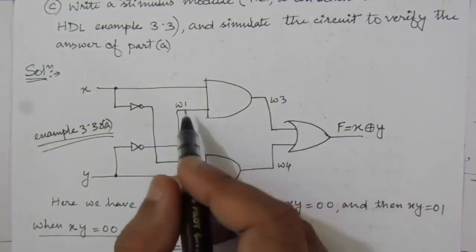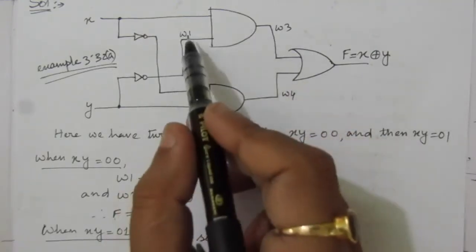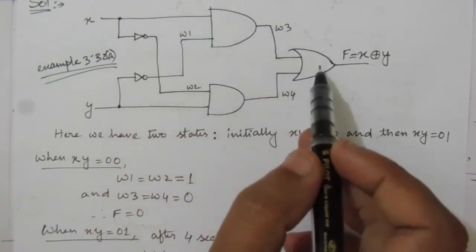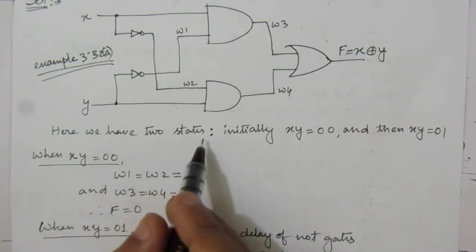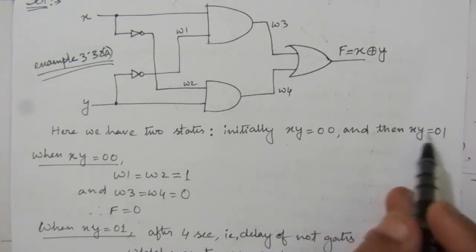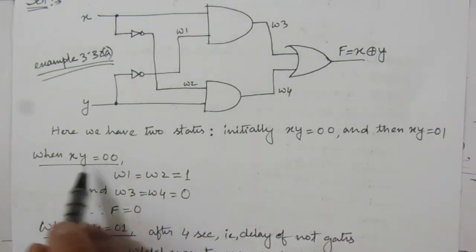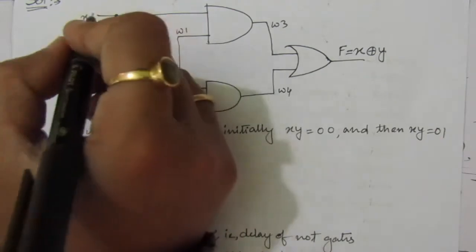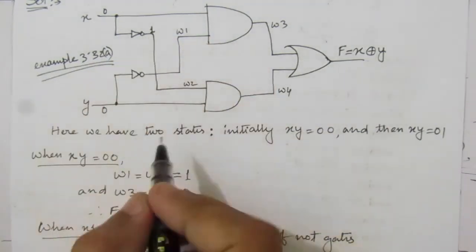Here we have the output F equal to X XOR Y. We have assigned wires W1, W2, W3, and W4. We need to determine the output signals at various gate outputs. For NOT gate one, NOT gate two, AND gate one, AND gate two, and OR gate one. Initially, when XY equals 00: X is zero, so after the inverter we get W1 equal to one. Similarly, Y is zero, so after its inverter we get W2 equal to one.